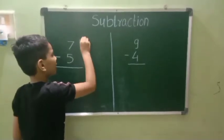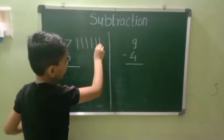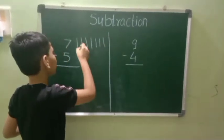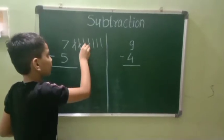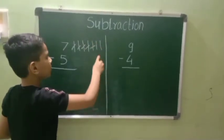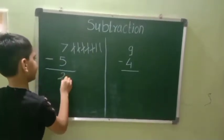Counting 1, 2, 3, 4, 5, 6, 7. Now subtracting 1, 2, 3, 4, 5. We have 1, 2 remaining. Our answer is 2.